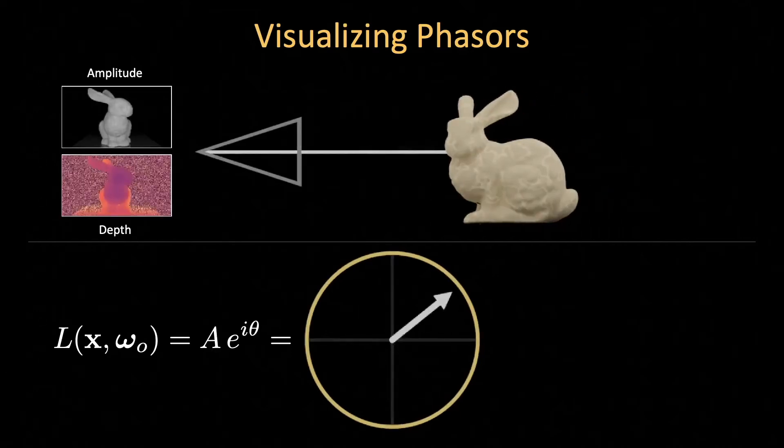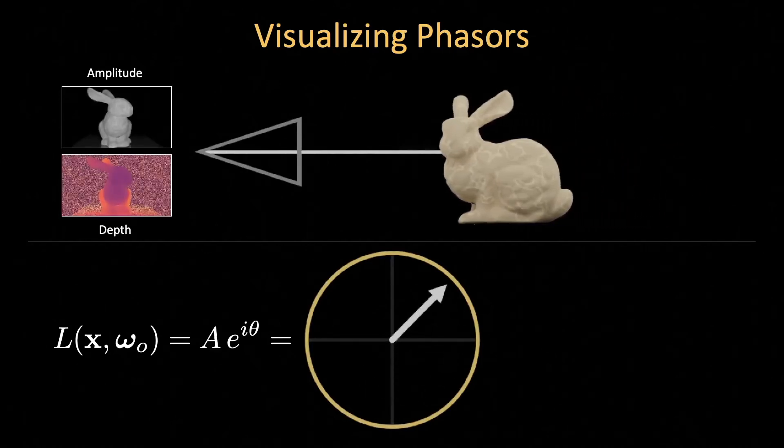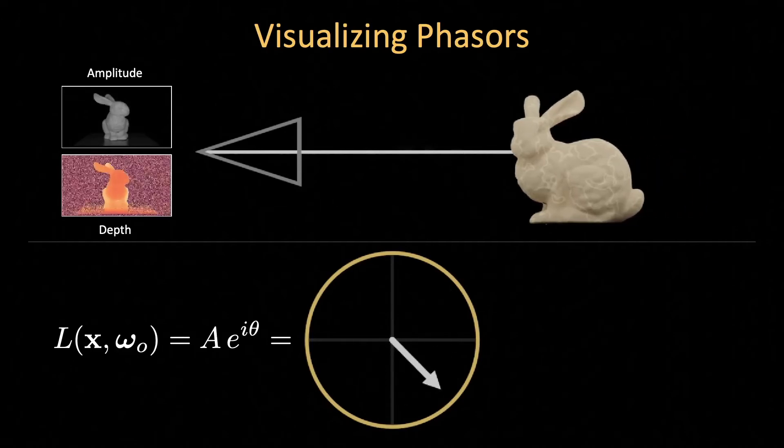As the object moves, the phase changes accordingly. The amplitude also decreases as the object moves further away, because less light is being reflected back to the camera.